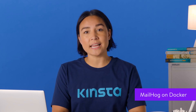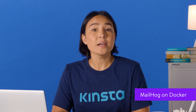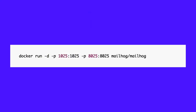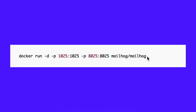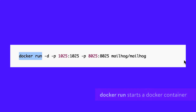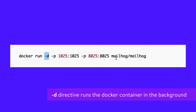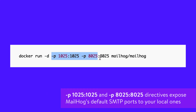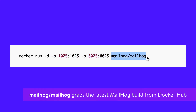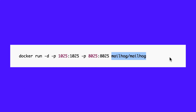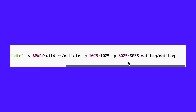Docker is one of the easiest ways to set up MailHog across any platform. First, make sure that you have Docker installed on your machine. Next, you can start MailHog directly from Docker Hub by running the following command. Docker run starts a Docker container. The -d directive runs the container in the background. The -p 1025:1025 and -p 8025:8025 directives expose MailHog's default SMTP ports to your local ones. mailhog/mailhog grabs the latest MailHog build from Docker Hub. Alternatively, if you want to mount MailHog's mail directory to your local file system, you can run the following command. You can visit these addresses in your browser to use the MailHog web UI.